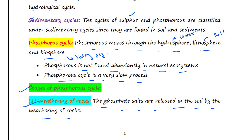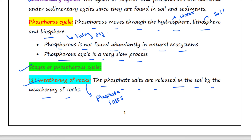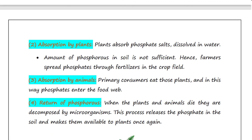Phosphate salts are found in rocks abundantly. The next stage is absorption by plants — plants absorb phosphate salts dissolved in water. However, the amount of phosphorus in soil is not sufficient, so farmers spread phosphate salts through fertilizers in the crop field.